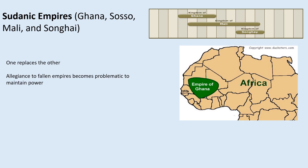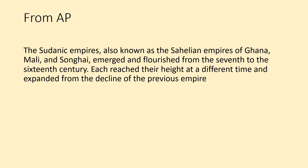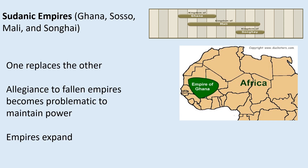We're going to transition to the Sudanic Empires. You will see references to these four, and one replaces the other — that's what they're trying to show you in this particular timeline. Notice the proximity to the coast. This is key because as we get into the transatlantic slave trade, we're going to see the forced exodus of slaves from the coast as they go to North, Central, and South America. Allegiance to a fallen empire becomes problematic to maintain power, which is why you have different names as different events unfold, leading to a change of leadership as a result of internal strife. Each reached their height at a different time and expanded from the decline of the previous empire.